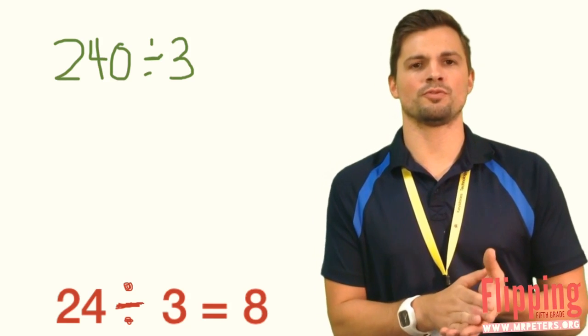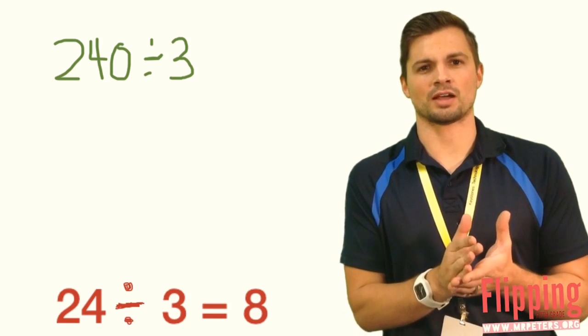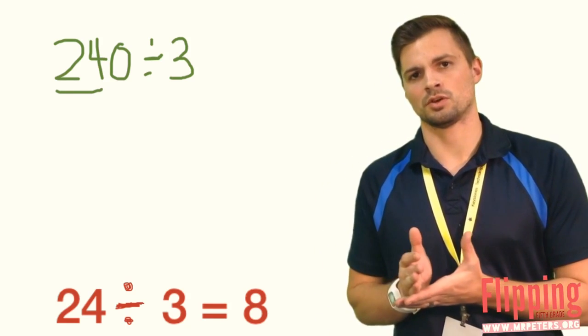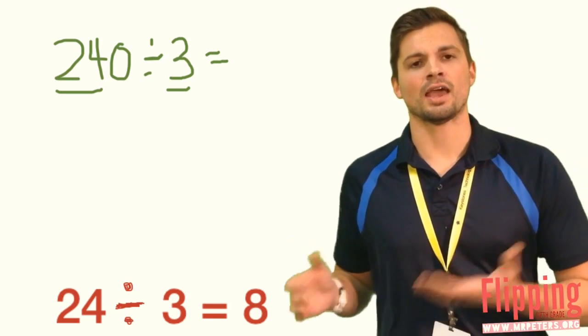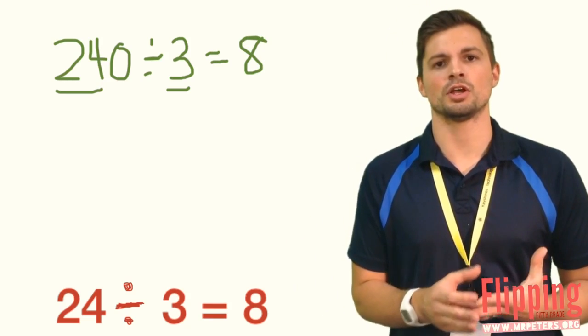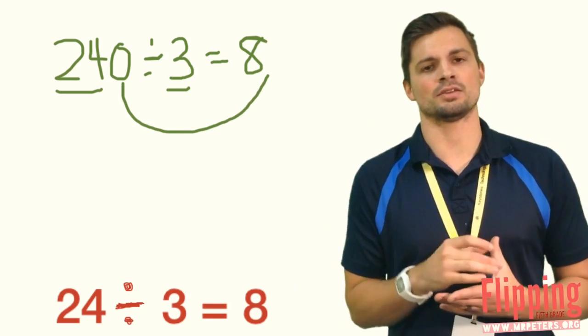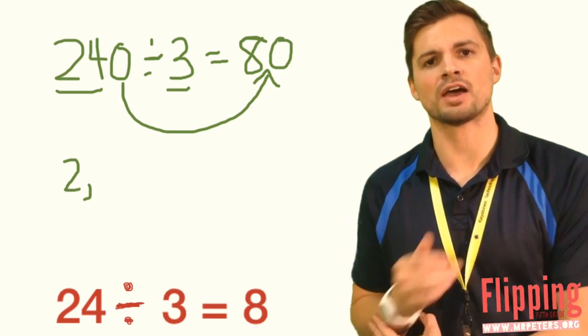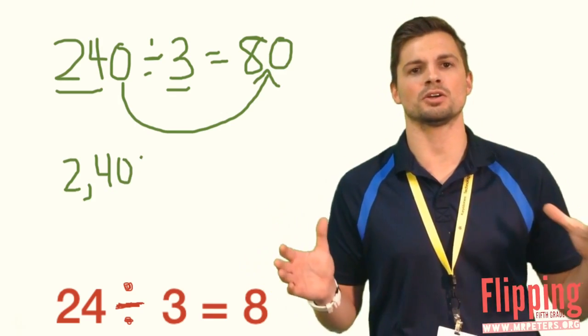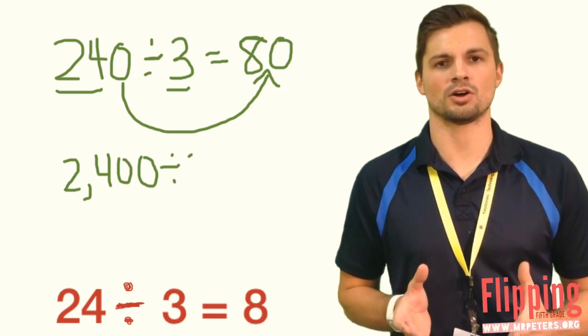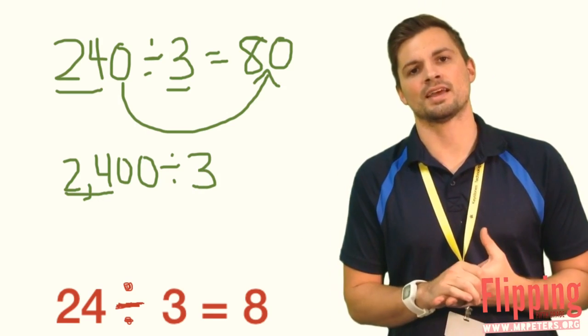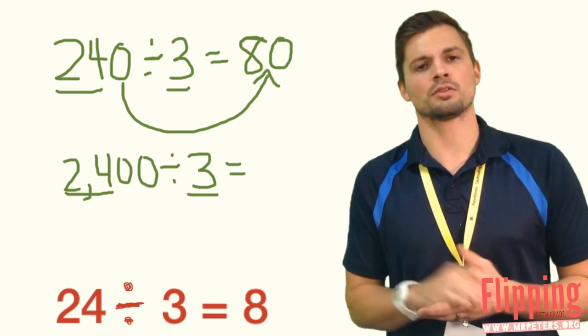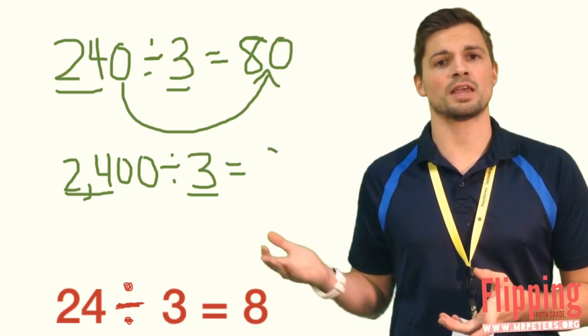Again, just like when we did this with multiplication, what you want to focus on here is that basic fact: 24 divided by 3. 24 divided by 3 is 8, and we have that zero left over so we're going to add it to the end of our quotient. Another example: 2400 divided by 3. The number keeps getting bigger, but the problem isn't any harder.